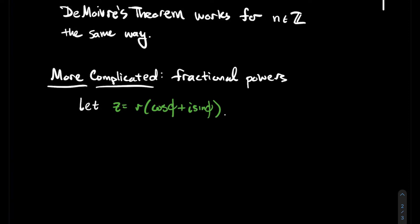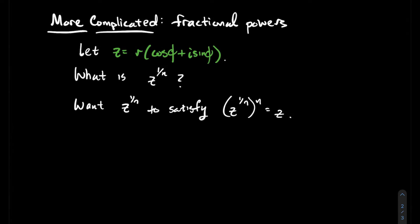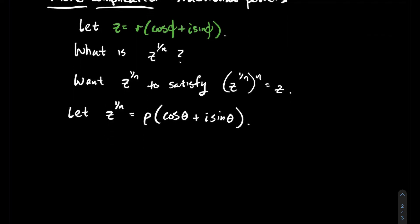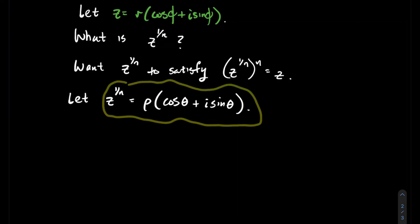So if z has polar form r times cosine of phi plus i sine of phi, I want to know what is z to the 1 over n power, where n is a natural number — so think: how do I take a square root, a 1/2 power? I want whatever z to the 1 over n is to be a complex number that satisfies the following: when you take z to the 1 over n, to the nth power, that ought to give you back z. So z to the 1 over n theoretically has some polar form. I'll use the Greek letter rho for its radius or absolute value, and the Greek letter theta for its argument.